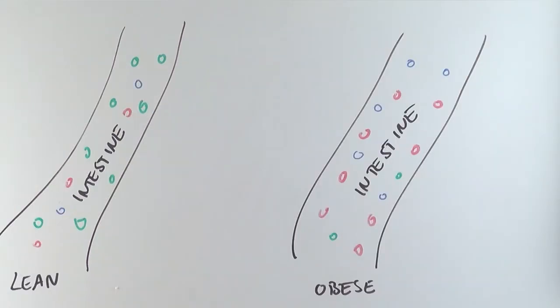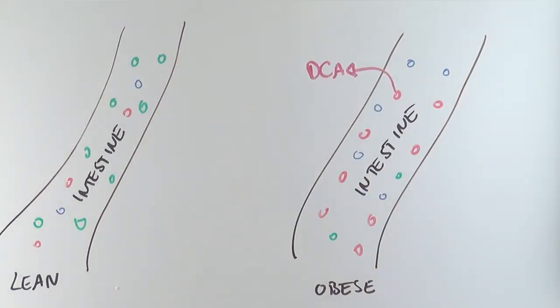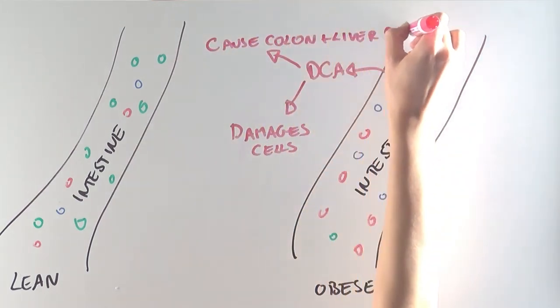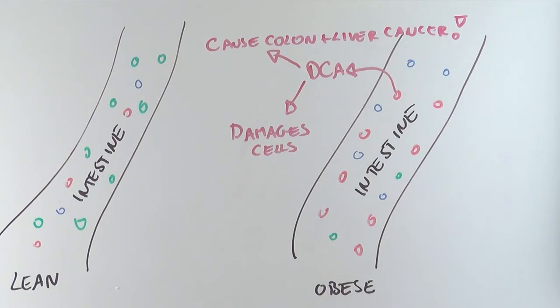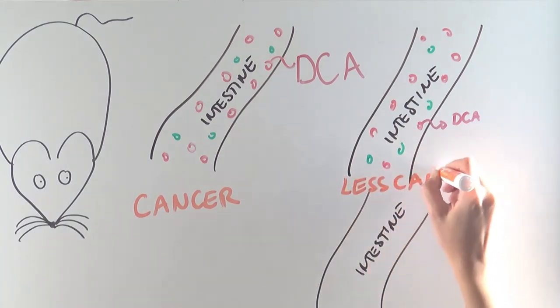Well, it turns out that bacteria from obese mice produce lots of DCA, a compound that damages cells and can even cause colon and liver cancer. That's a very interesting finding. When the scientists reduced levels of DCA or removed the bacteria from the intestines of obese mice, these mice no longer form tumors in the presence of the cancer-causing chemical.